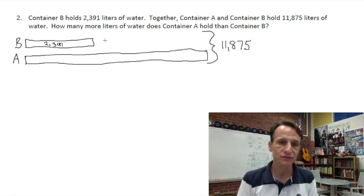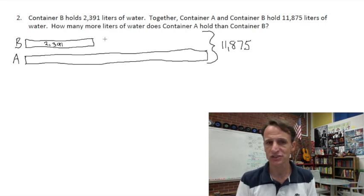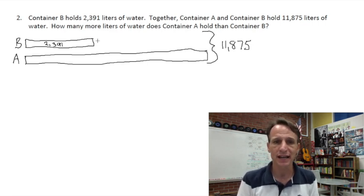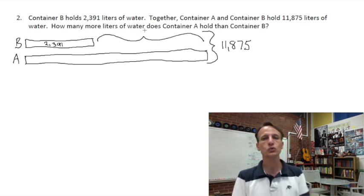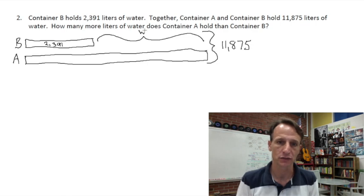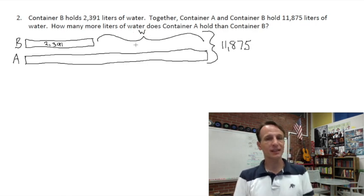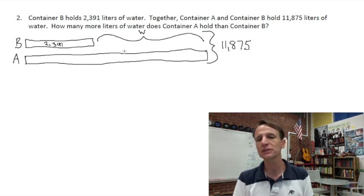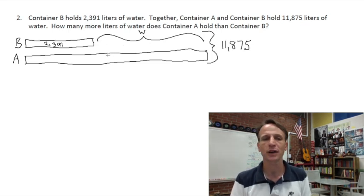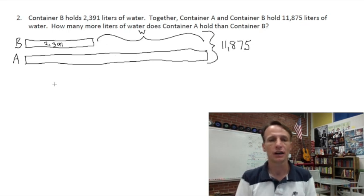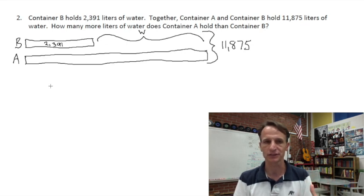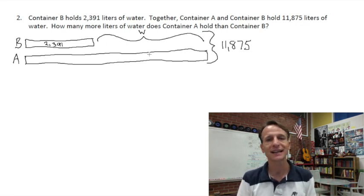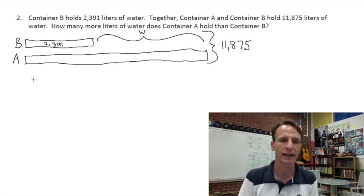Now we know that A is larger because we're asked how many more liters it has. We can make a quick estimate - rounding to the nearest thousand, together they're 12,000, container B is 2,000, so we're looking at upwards of 10,000 for container A. So when I draw them, I will make A substantially longer because I want to make it clear in my tape diagram that A is bigger. But here's the thing - I have to figure out how much A holds first. I do know that together they hold 11,875 liters. But what I'm trying to find is the difference between them here. Let's call that W for water. This W, the difference between them, is what I really need to find, but it's a multi-step problem.